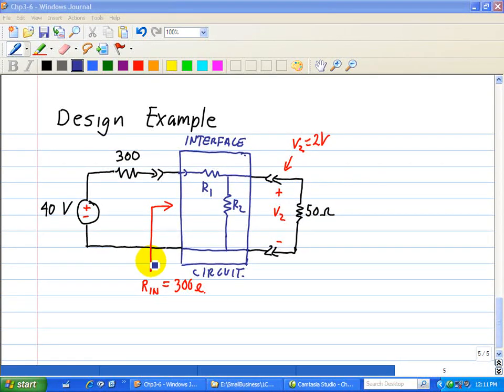In addition, the resistance seen at the input port is 300 ohms. When that happens, we say that the input resistance is matched to the 300 ohm source resistance.